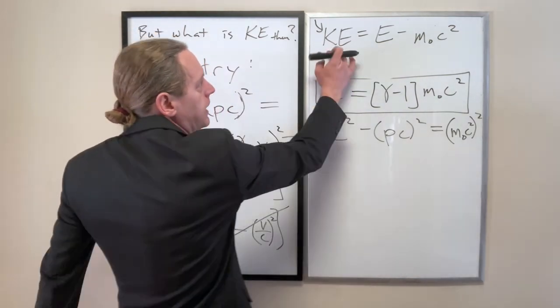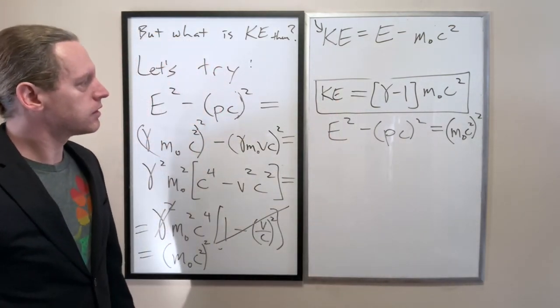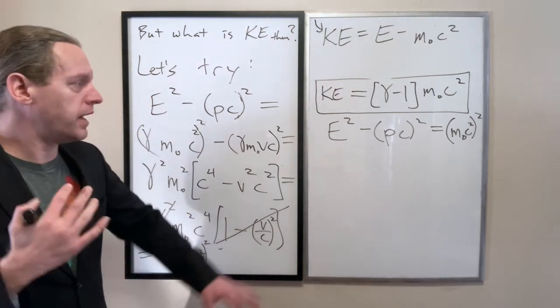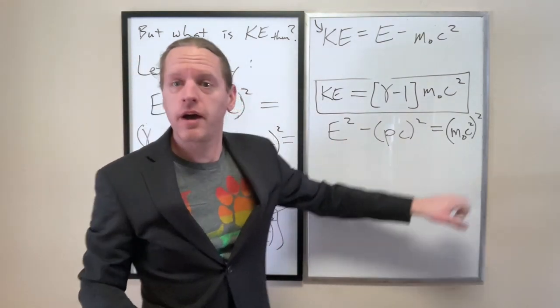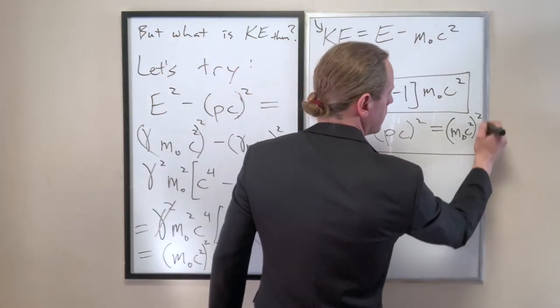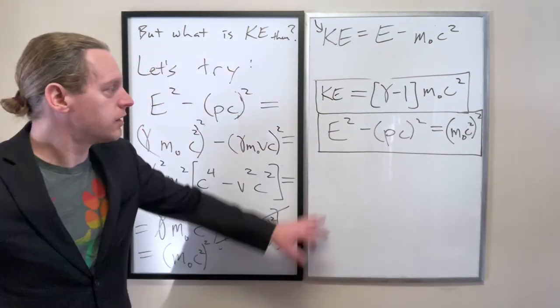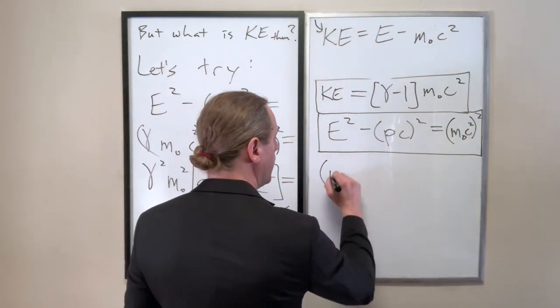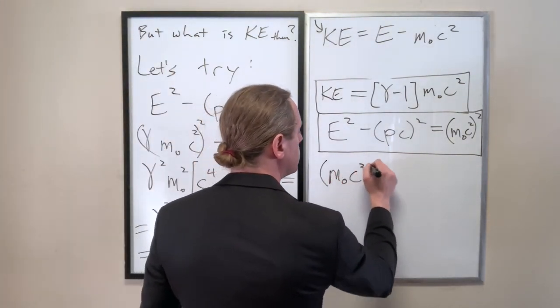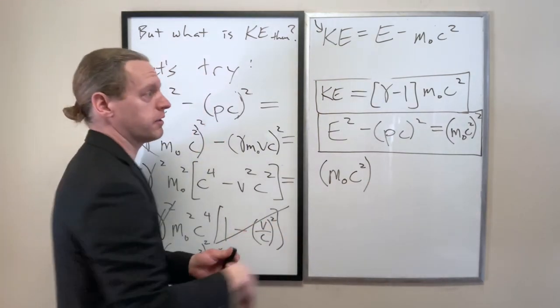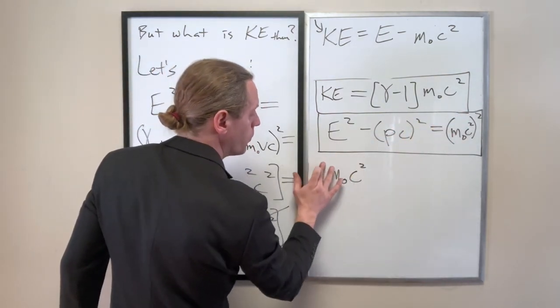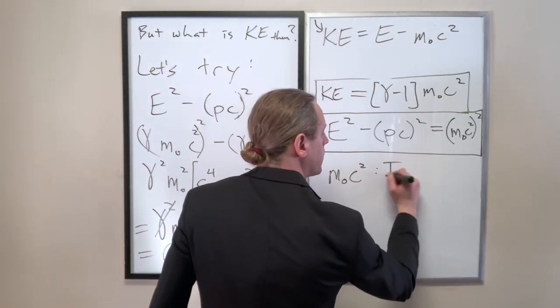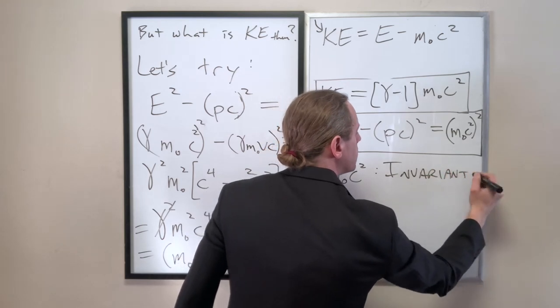If we just rearrange that a little bit, and I'll write it here. If we rearrange just a little bit here, we can see that there's an M naught C squared which equals KE minus E. I feel like I might have dropped a square there at some point. But this equation right here that we have is ultimately what our relativistic energy invariant is.